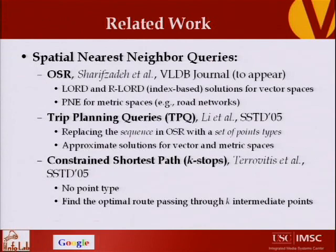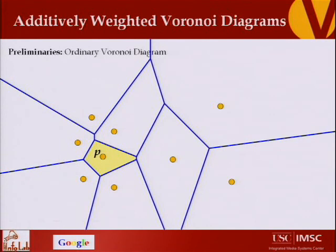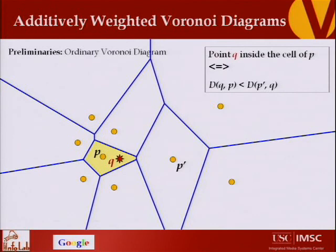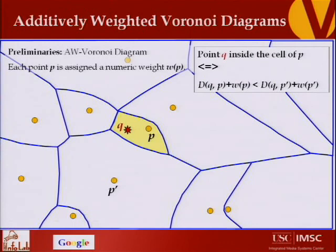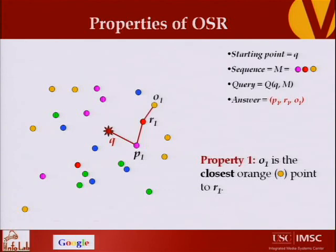Now, let's see how I use the Voronoi diagram to solve the optimal sequence route query. Recall: with additively weighted Voronoi diagram, each point is assigned a weight, and if Q is inside the Voronoi cell of P, then distance Q-P plus weight of P is less than distance Q-P' plus weight of P'. A key property: if the answer to the query starting from Q going to pink, red, orange is P1, R1, O1, then O1 is the closest orange point to R1. If you add any other orange point O2 not closest to R1, you get a longer route.